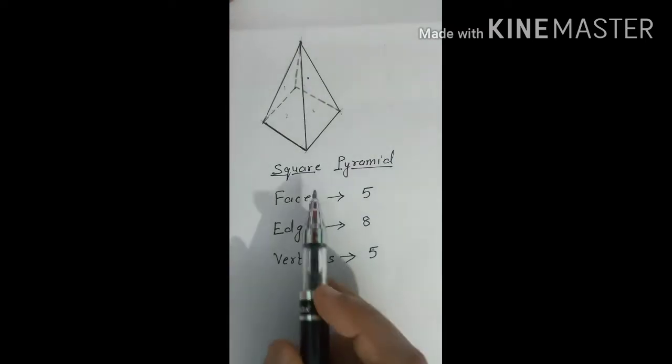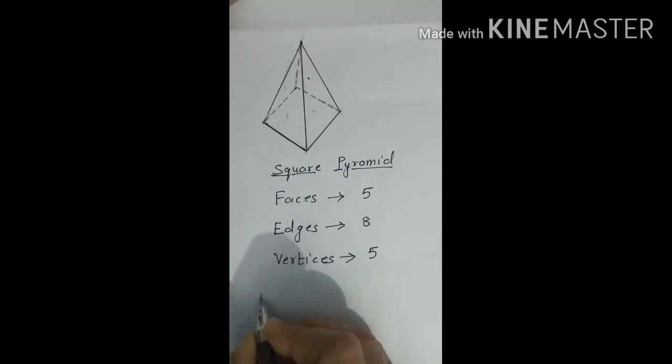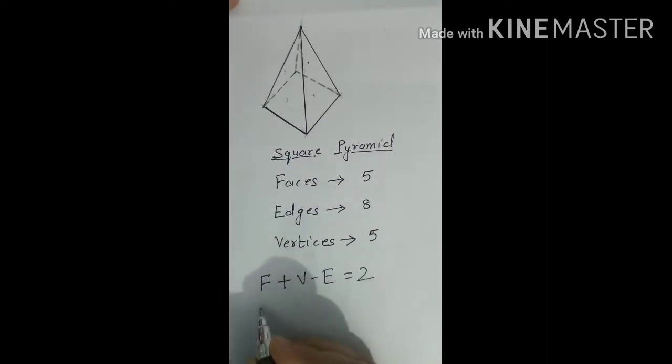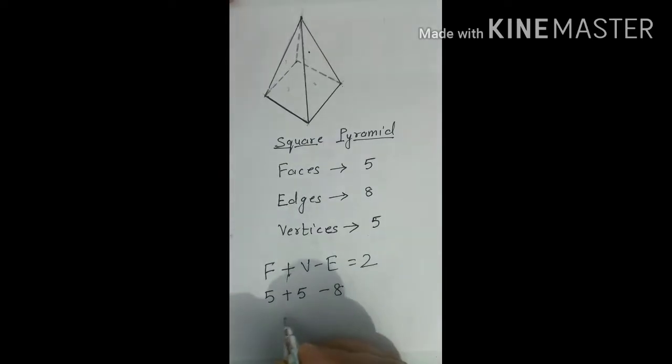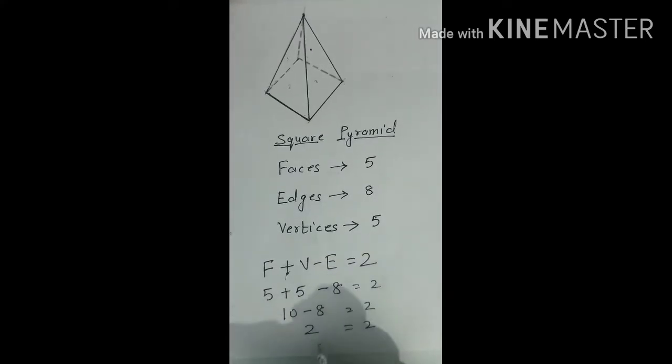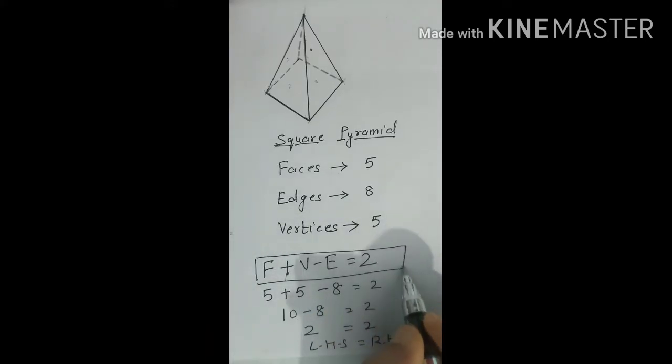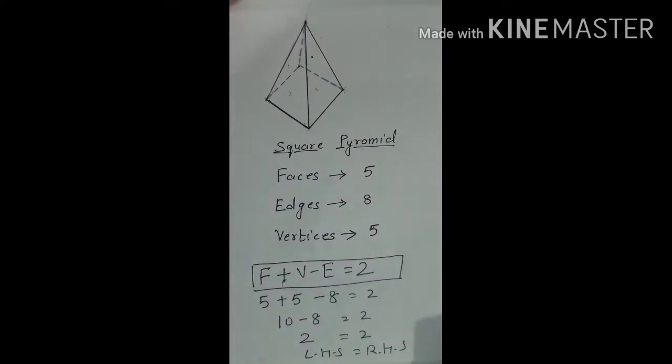We can check Euler formula for square pyramid also. So, what is the Euler formula? F plus V minus E is equal to 2. So, number of faces 5, number of vertices 5 and number of edges 8. 5 plus 5 gives me 10 minus 8, it gives me 2 and on right side also 2 is there. So, left hand side is equal to right hand side to this formula. This means square pyramid also satisfy the Euler formula.